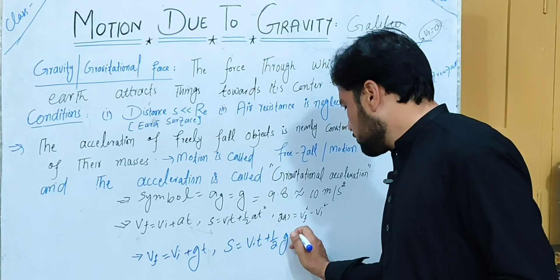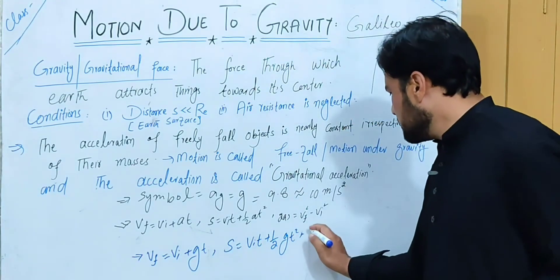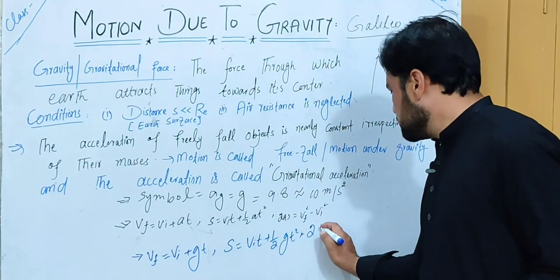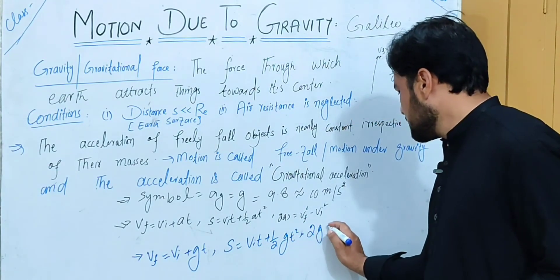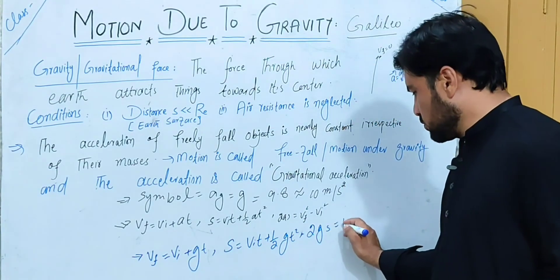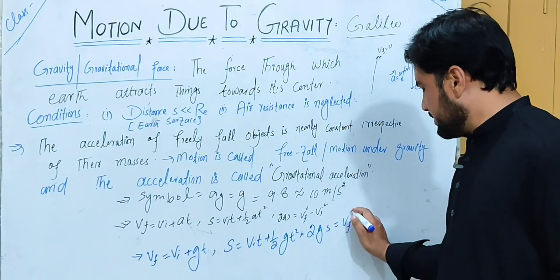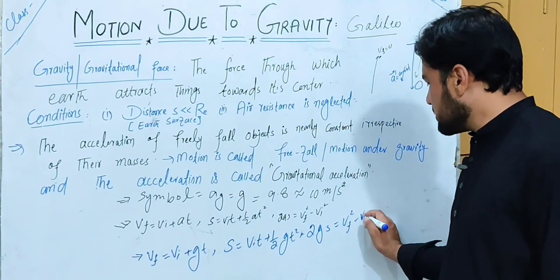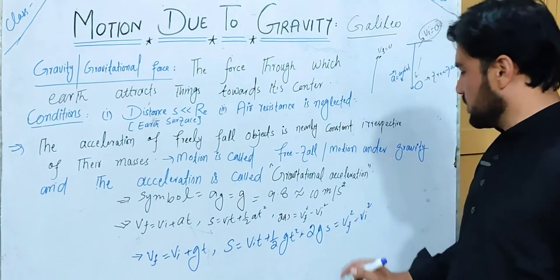The third equation of motion under gravity is: 2g·s = vf² − vi².